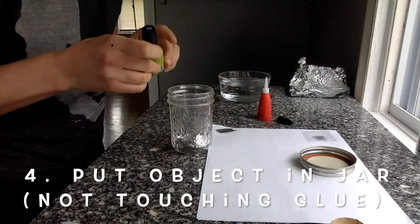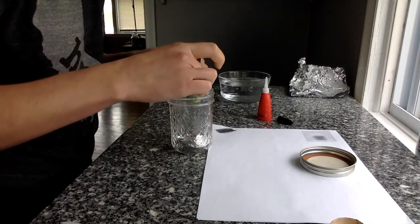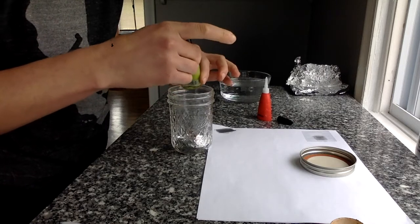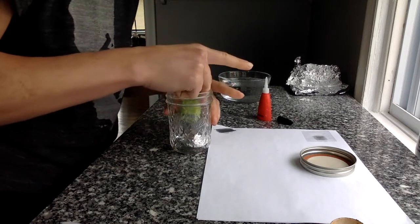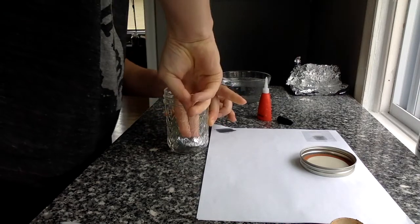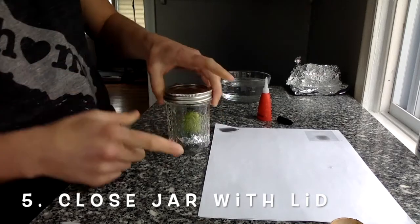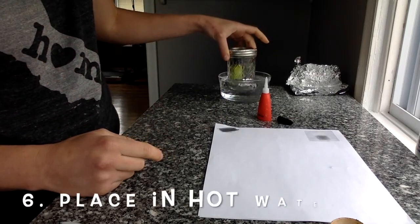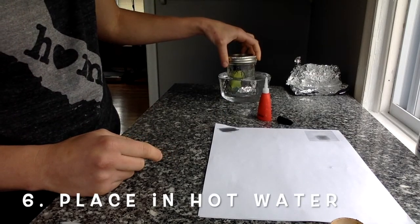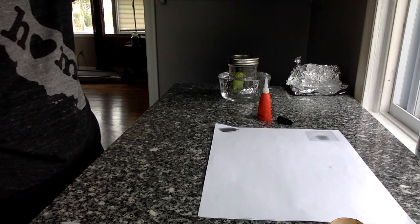You're going to take your object and stick it inside, but make sure that it is not touching the superglue. You're going to close up that jar and put it into your hot water. Just let it sit there for a couple minutes.